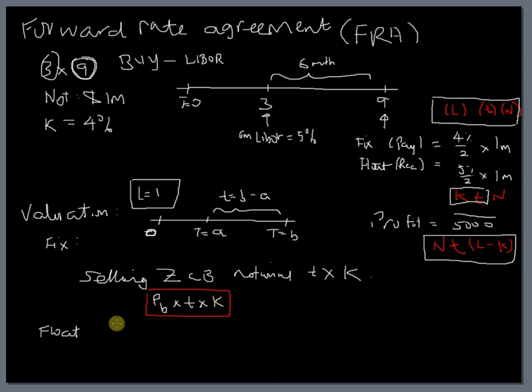So we want to obtain this amount. We can replicate this fixed amount by selling a zero coupon bond. Selling a zero coupon bond of notional T times K.